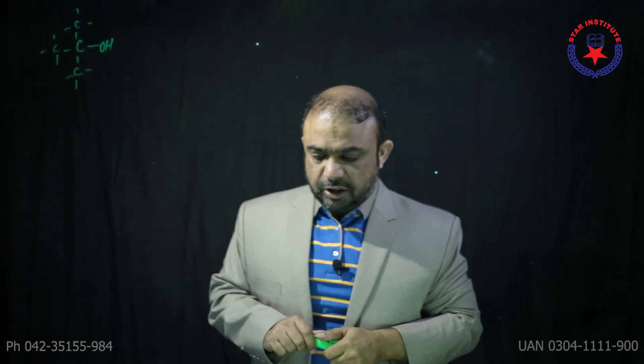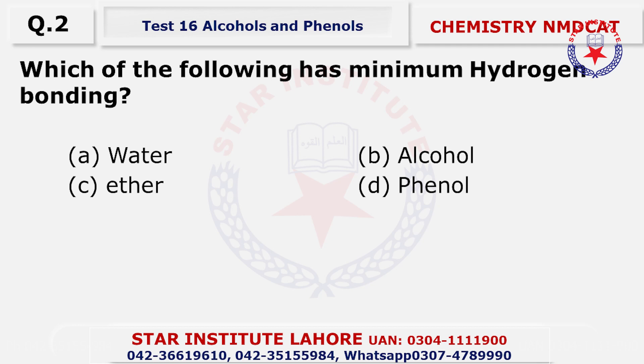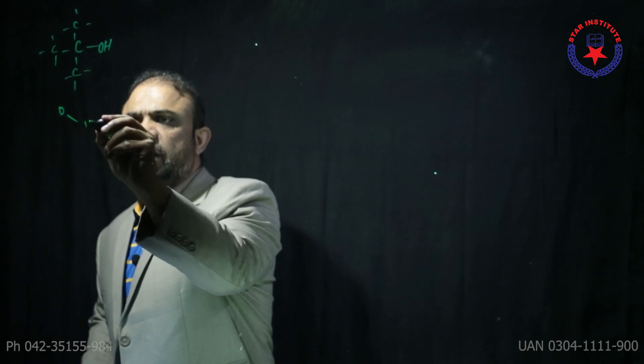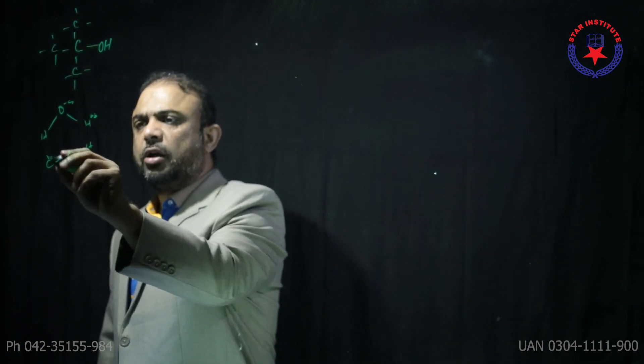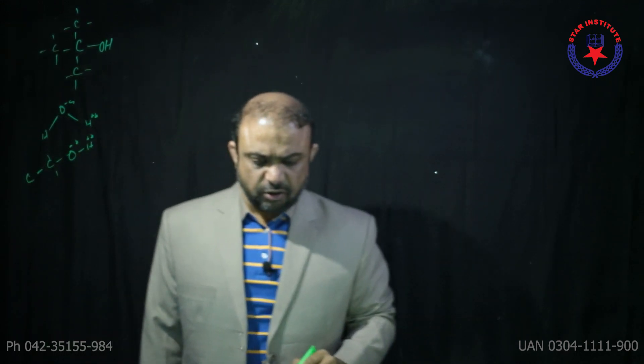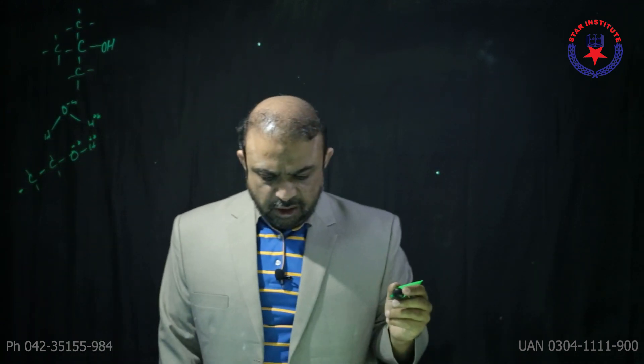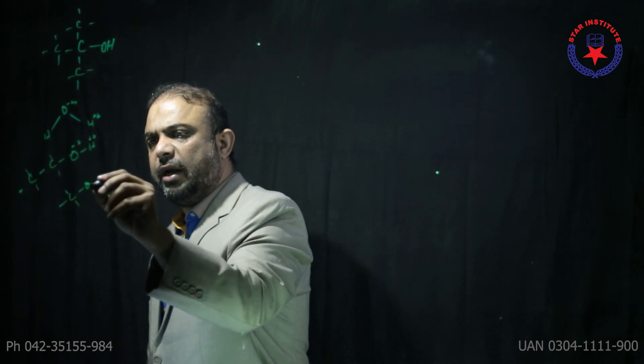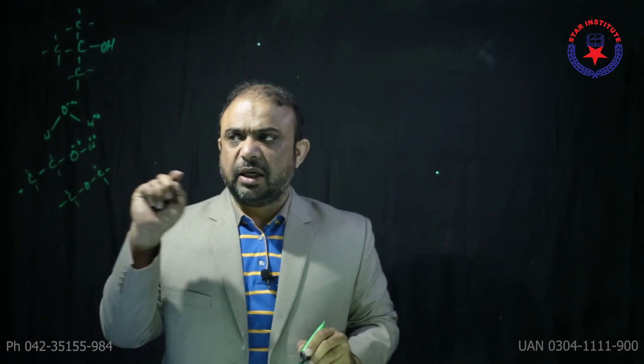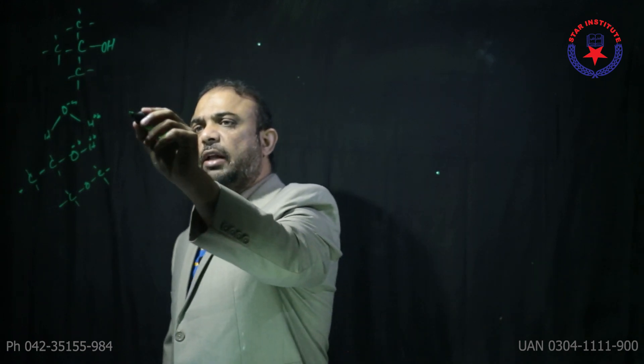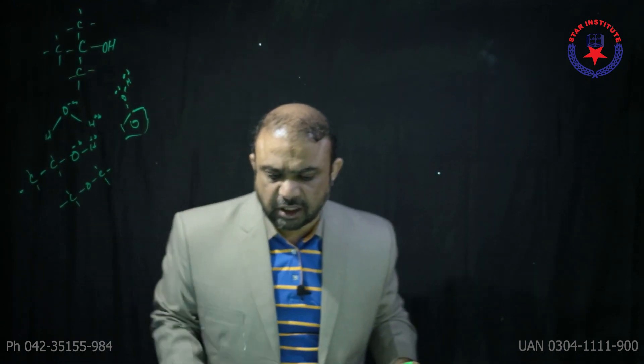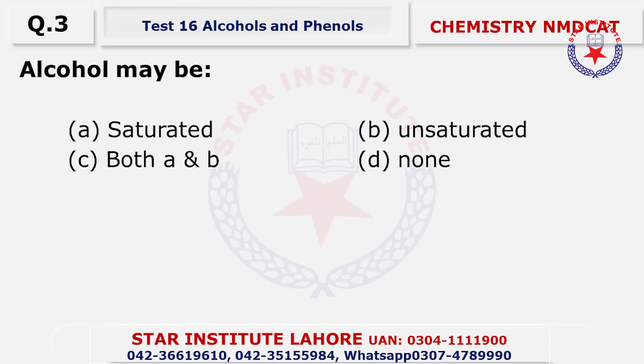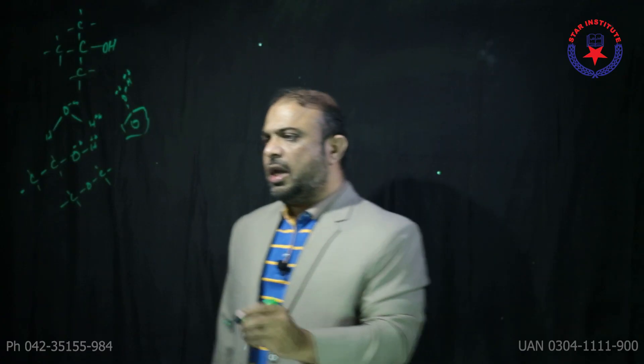Question number two: which of the following has minimum hydrogen bonding? To show hydrogen bonding, hydrogen must be attached to a highly electronegative element. Option A has water - capable. Option B has ethanol - possible because oxygen is connected to hydrogen. Option C has ether - no hydrogen directly connected to oxygen, so it cannot show hydrogen bonding.